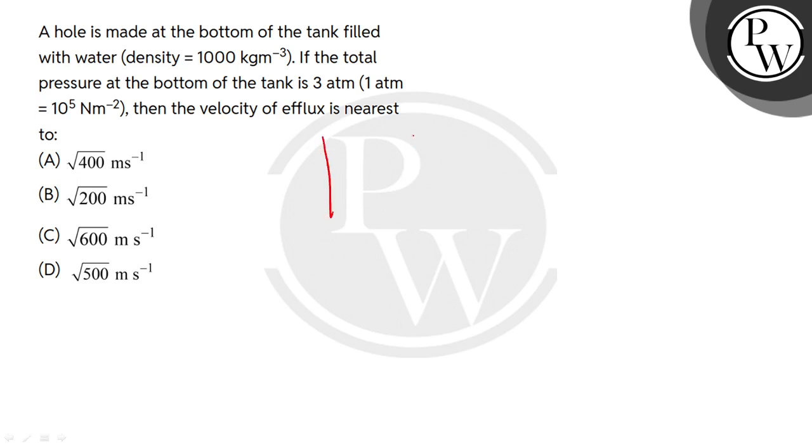So the question is that at the bottom of the tank we have made a hole. We have filled it with water. We need to find out the velocity of the efflux. Now the velocity of the efflux is square root of 2gh, where h is the height of the liquid column above the orifice, above the hole height.